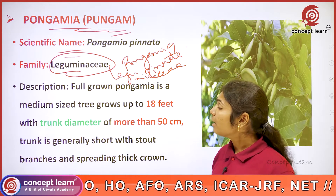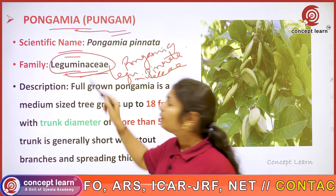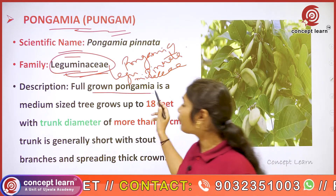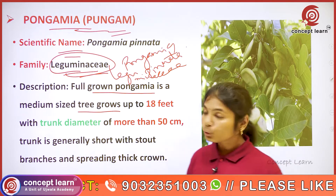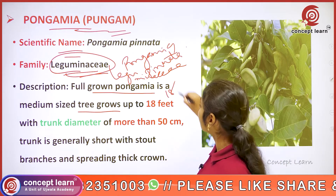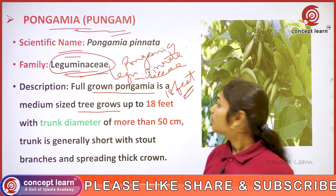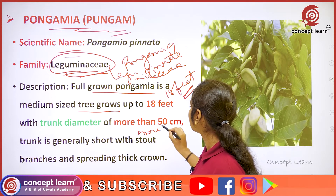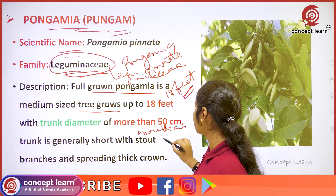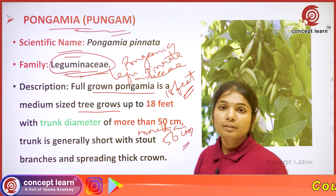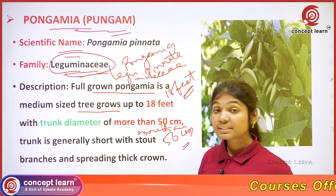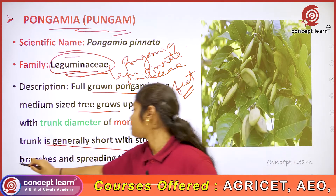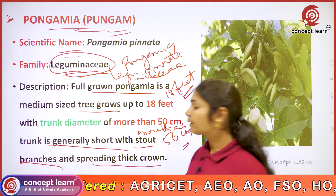The tree Pungamia belongs to the family Leguminaceae. When it comes to the description, a full-grown Pungamia is a medium-sized tree which grows up to 18 feet, with a trunk diameter of more than 50 centimeters. The trunk is generally short with stout branches and a spreading thick crown.